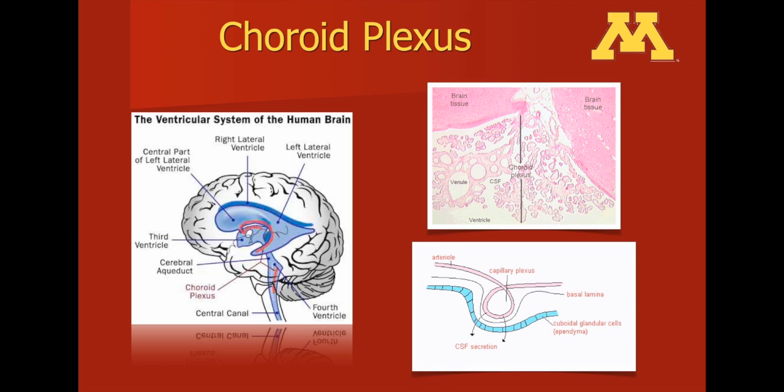One can see how the arteriole goes into the capillary plexus. Fluid is then transferred from the blood system and into the cerebrospinal fluid space, crossing the ependema.